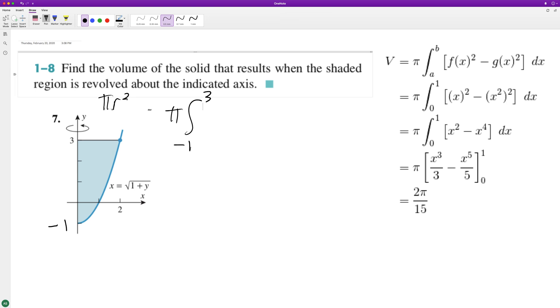And see here, this is just going to be square root of 1 plus y squared, so we end up with pi from negative 1 to 3 of 1 plus y. So this ends up being equal to...